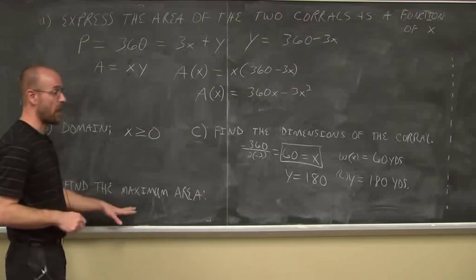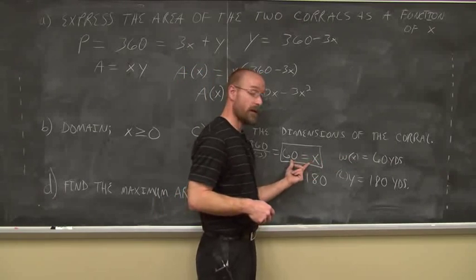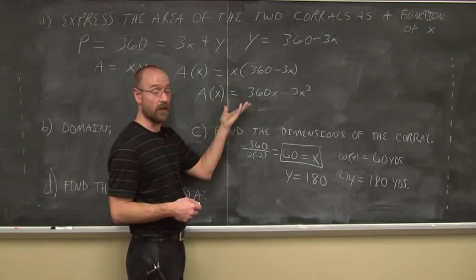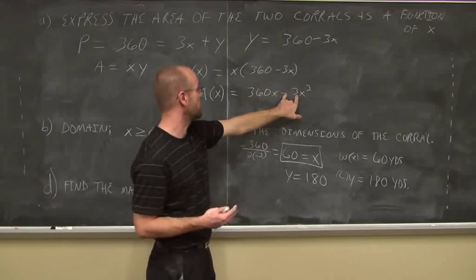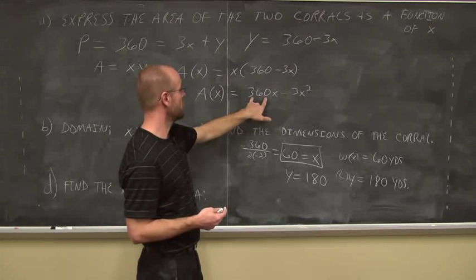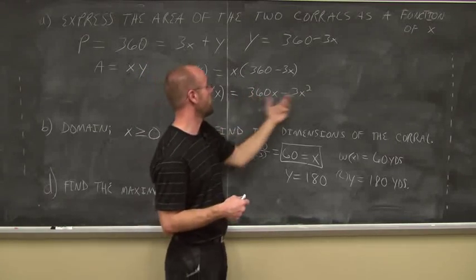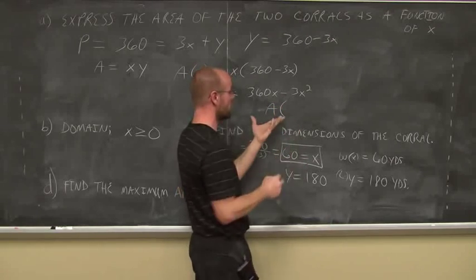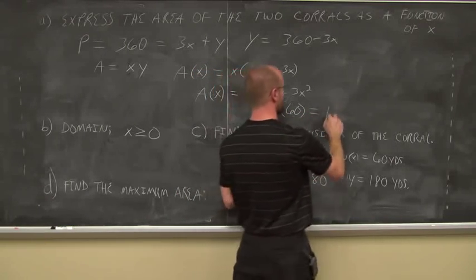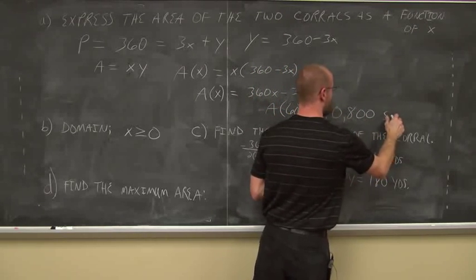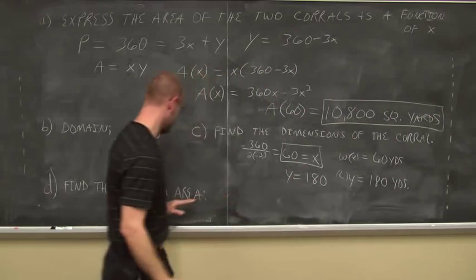The last one asks us to find the maximum area. We could use our calculators to do that, but we have all the information we need here. We can just plug in x equals 60, that value, into our function, because it is a value of x. 60² is 3,600. Times -3 is -10,800. 60 times 360 is 21,600. If we subtract them, we get 10,800. So essentially, we're assessing this for the area as x is 60. We get 10,800 square, because it's an area, yards. And this answers our maximum area.